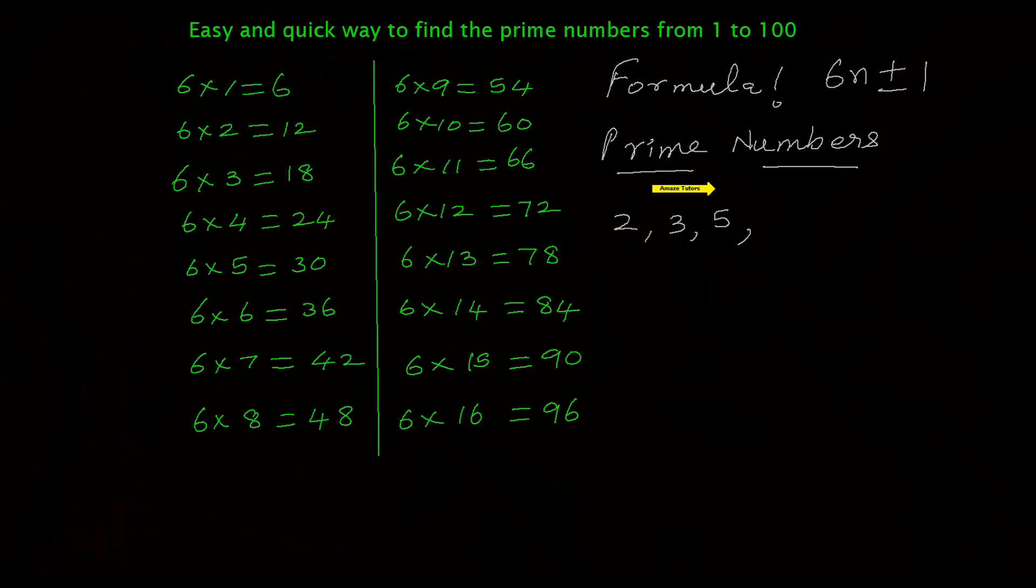Now the next number is 7. Now go to 6×2=12, subtract 1 which is 11. That is a prime number. Next, 6×3=18, take away 1 from 18. 17 is the next prime number. Add 1 with that which is 19, that is again a prime number. So this is how we have to keep on doing.